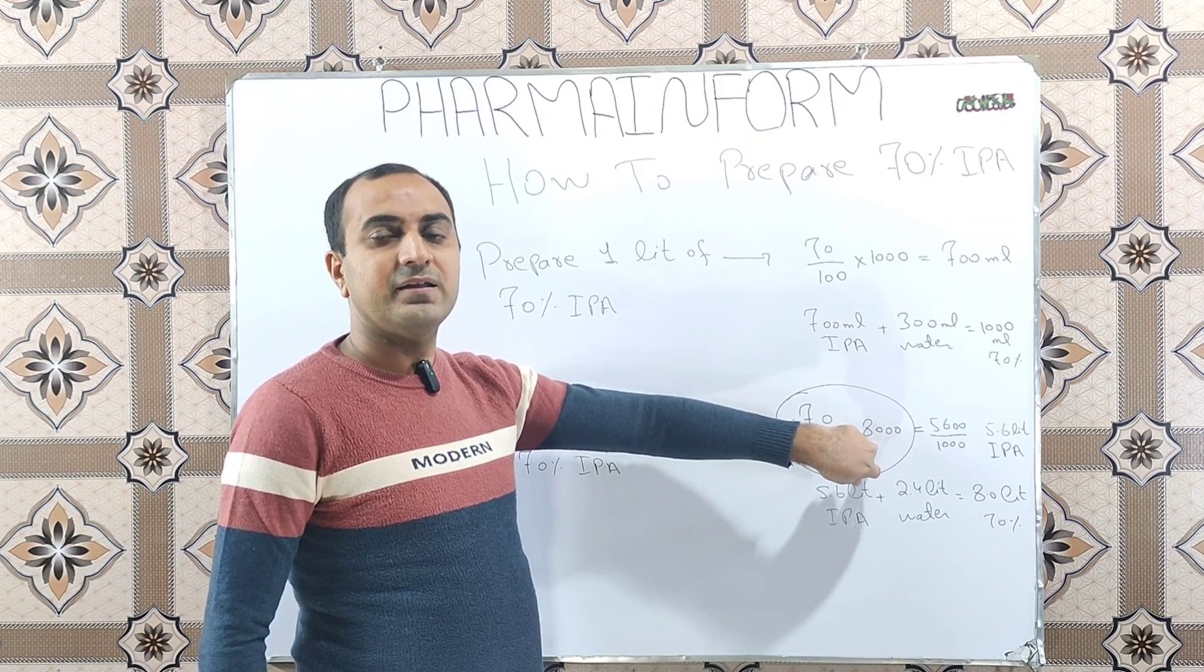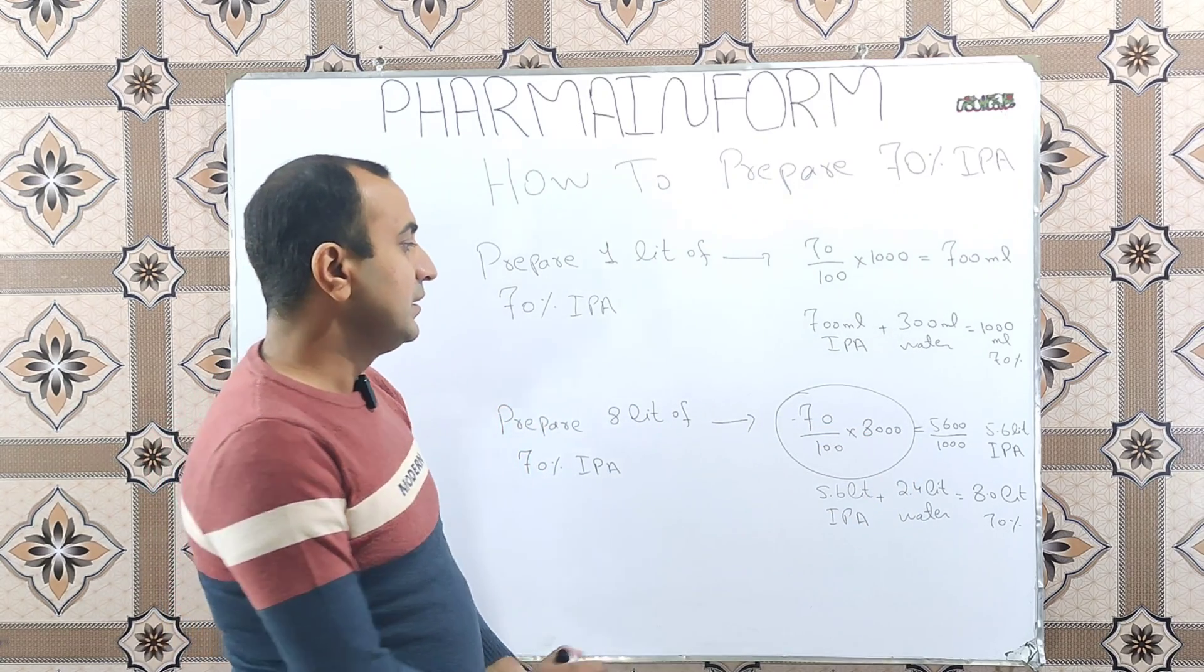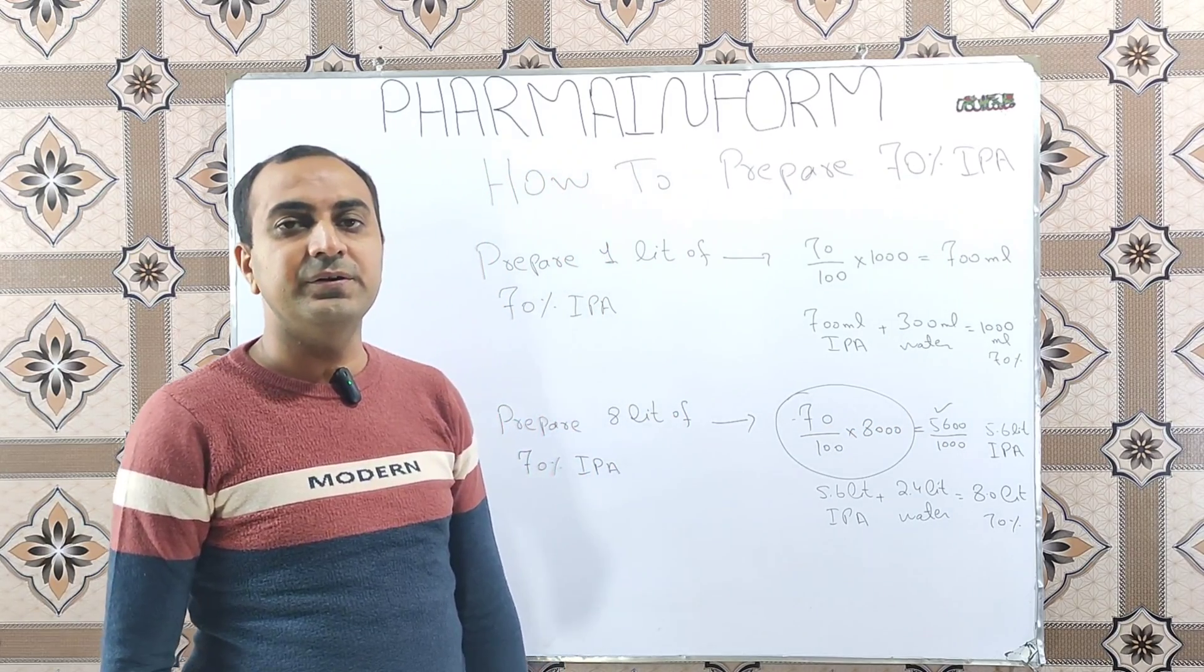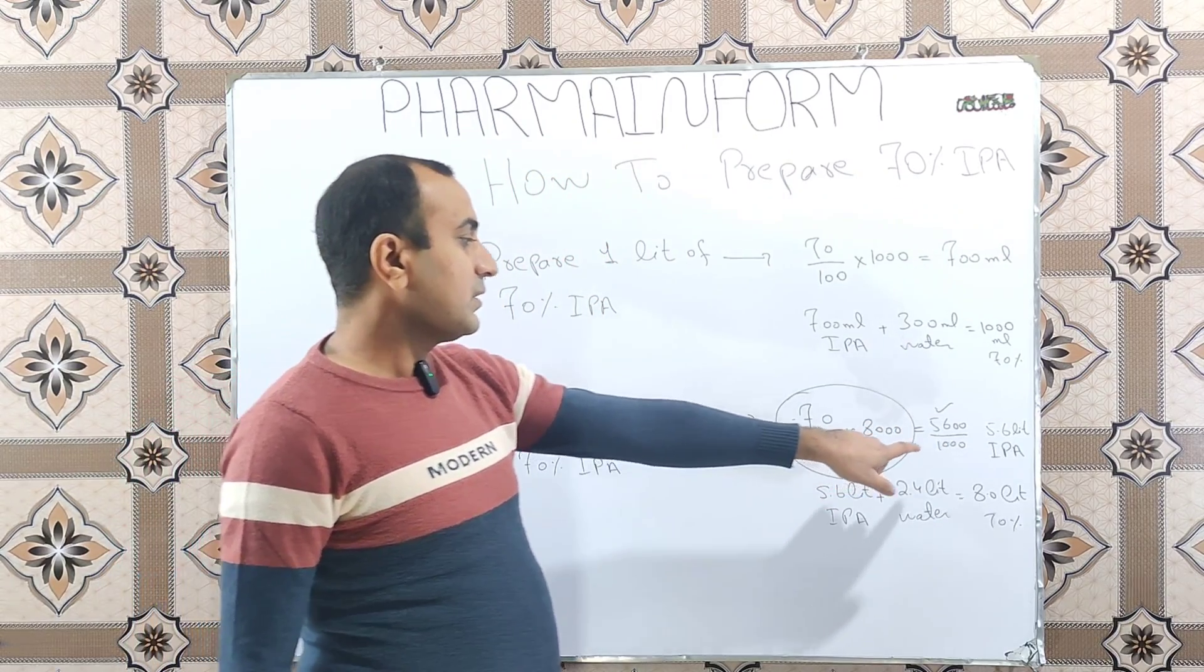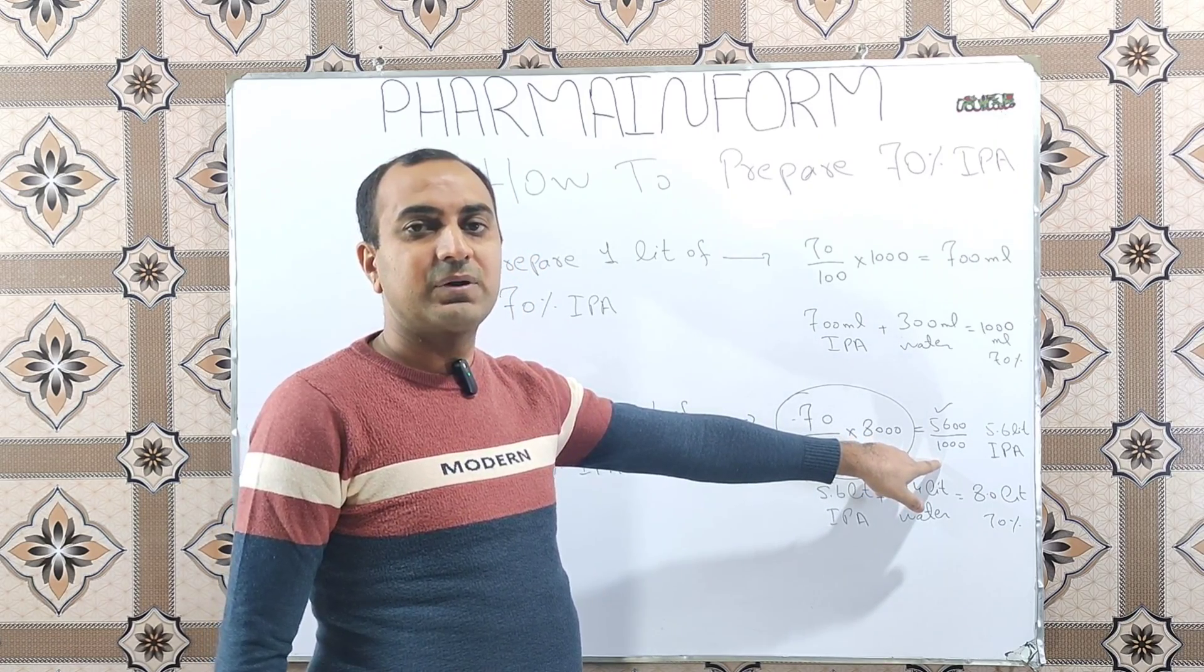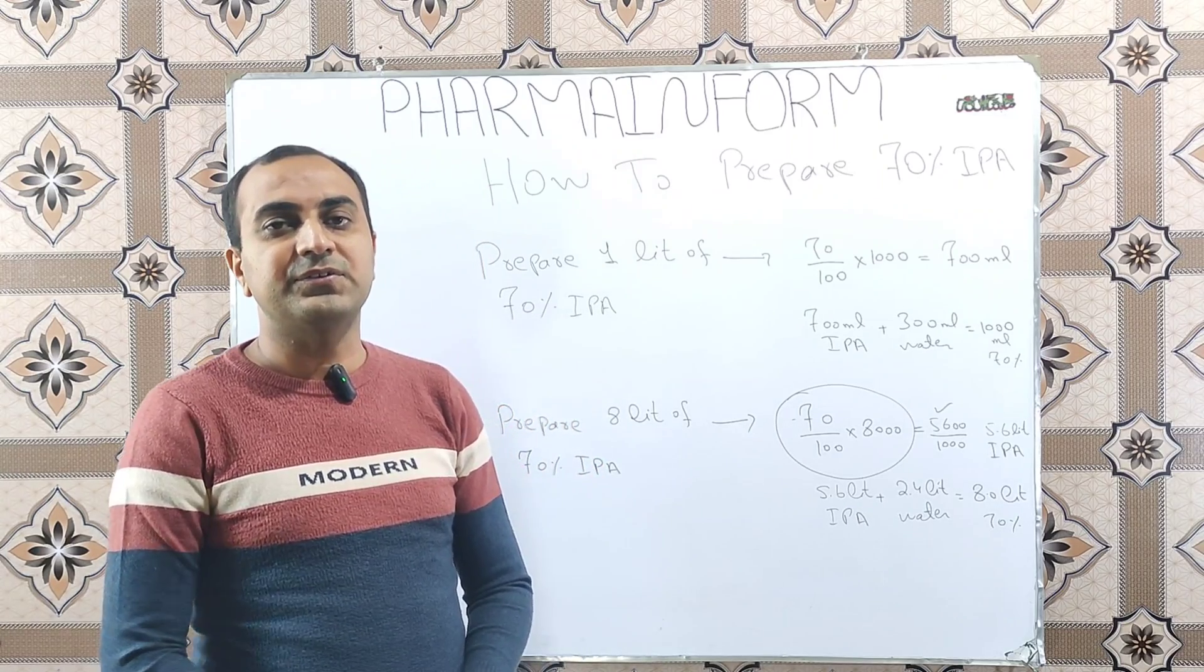So, the answer will be 5600 ml. We convert it again into liters by dividing it by 1000 and answer will be 5.6 liters.